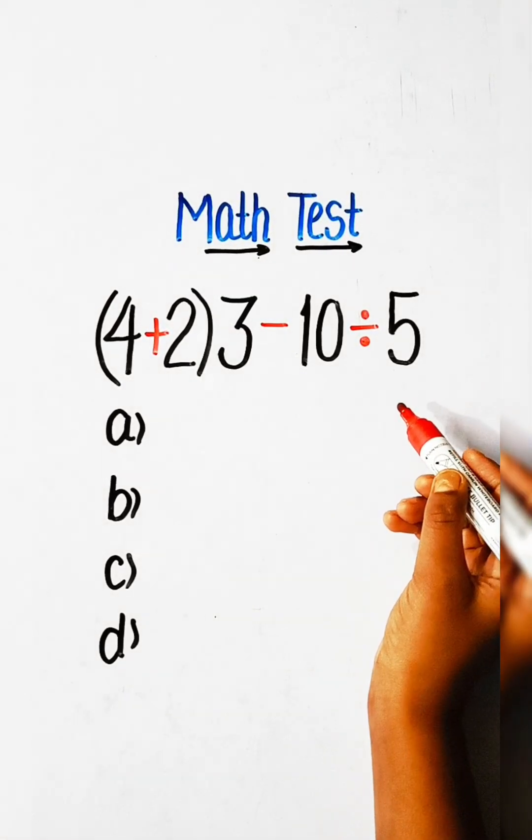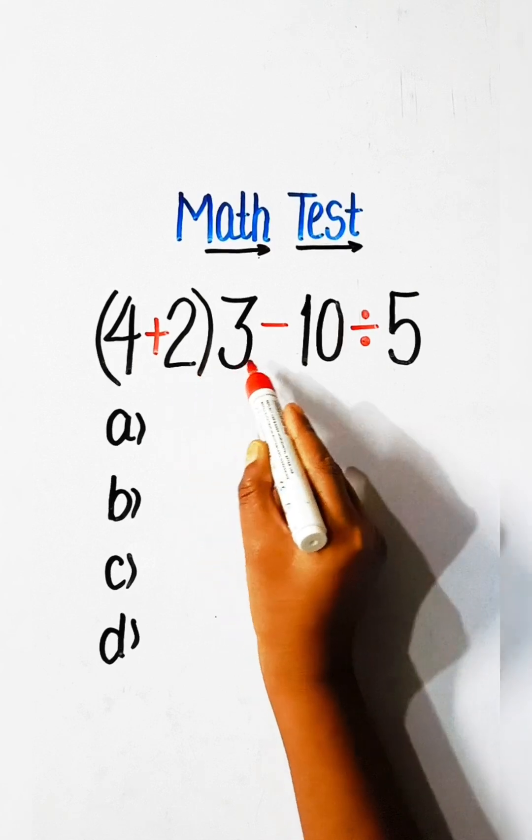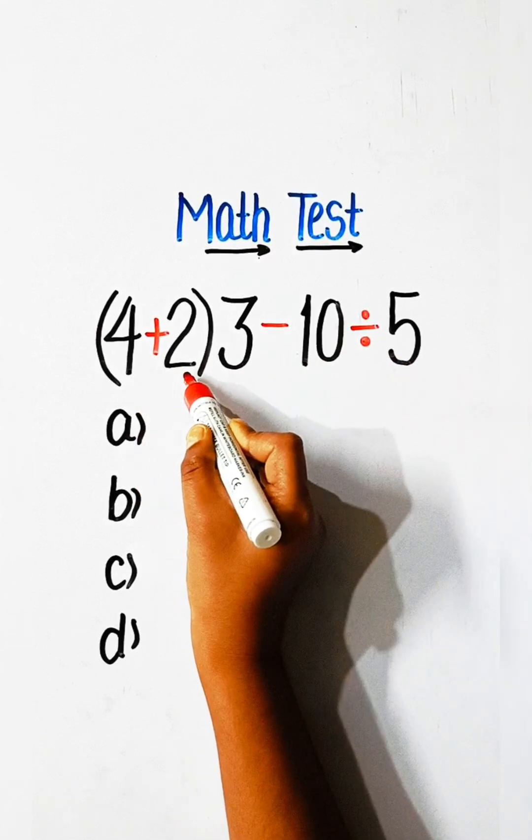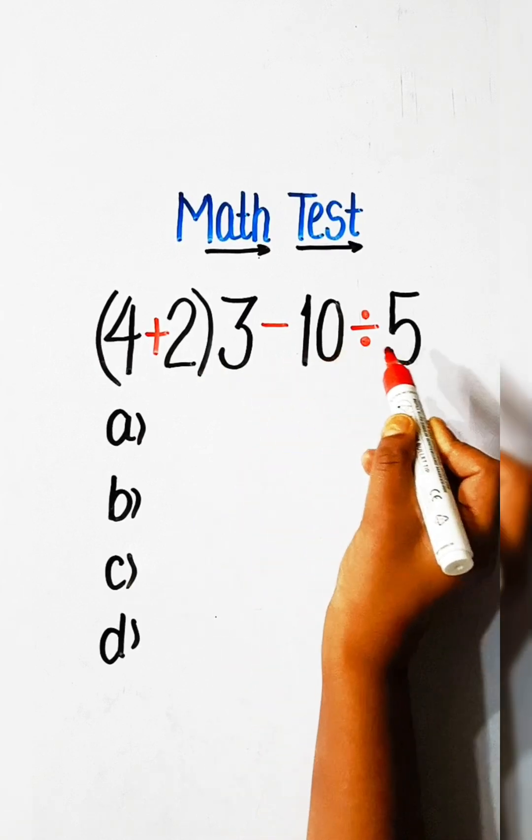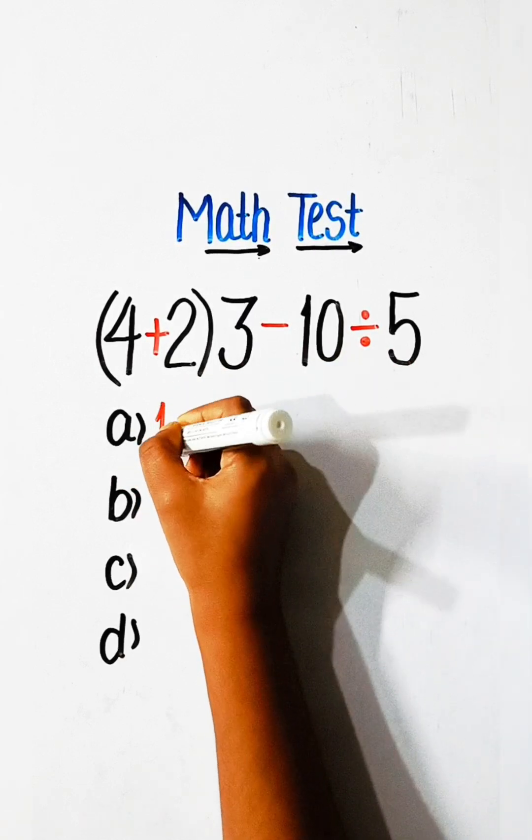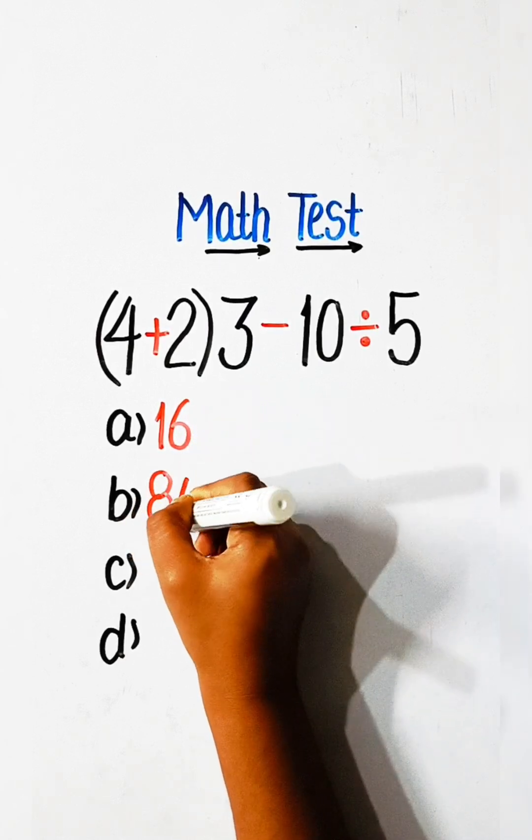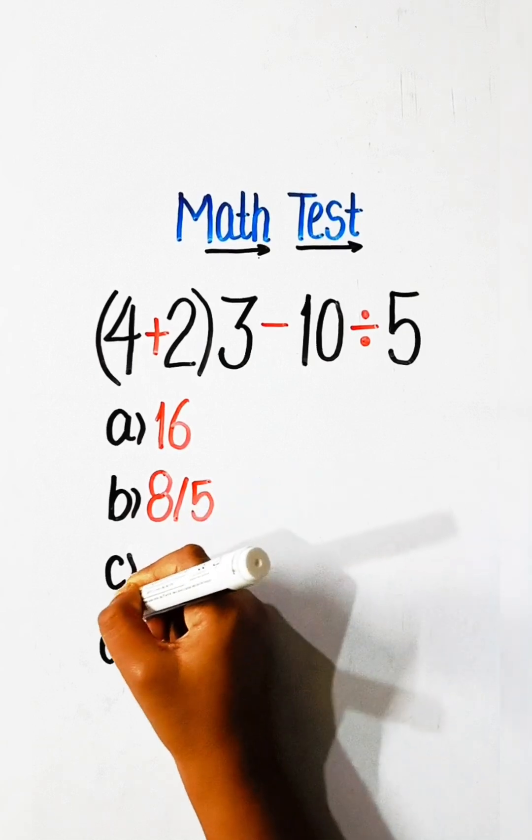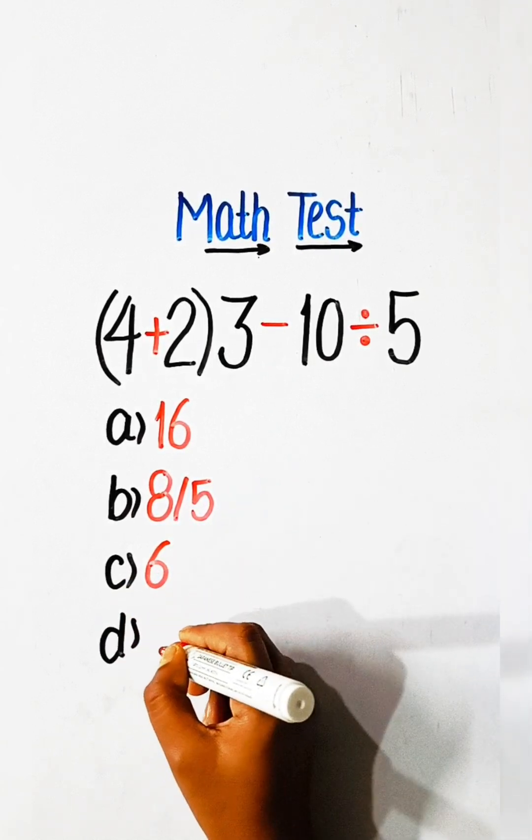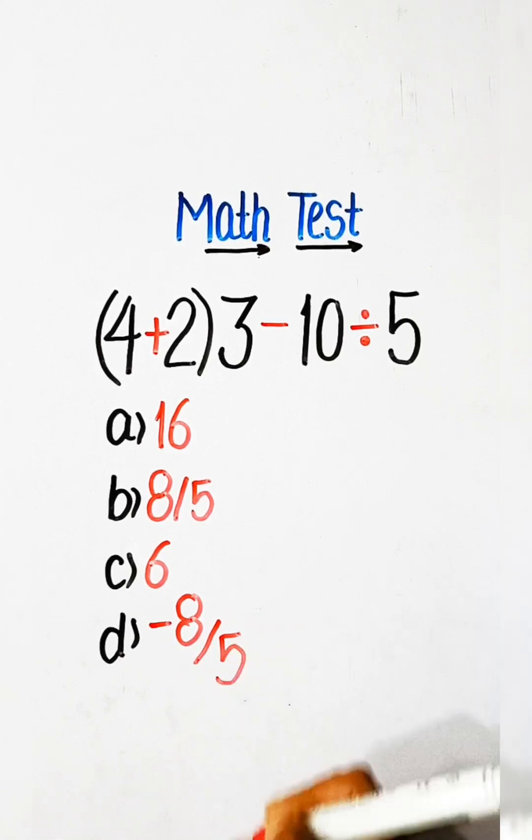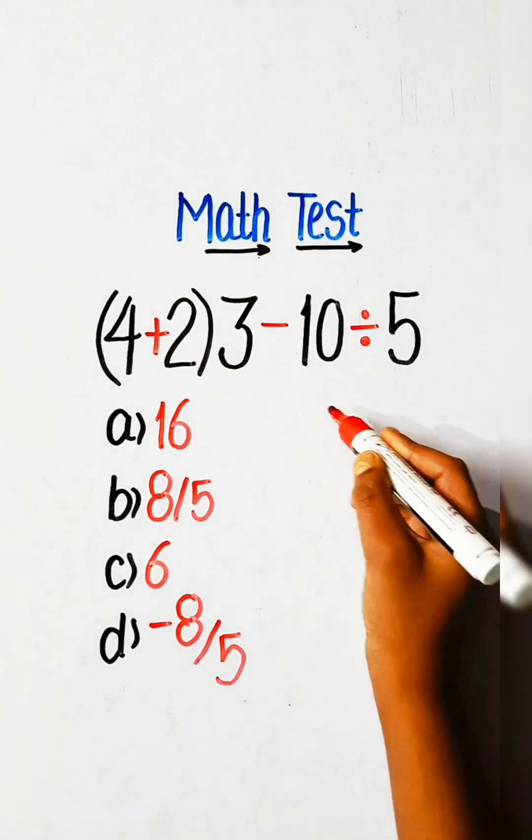Hello friends, let's solve another math expression: 4 plus, in brackets, 4 plus 2, multiply by 3 minus 10 divided by 5 equals to what? Option a: 16, option b: 8 upon 5, option c: 6, option d: minus 8 upon 5. Comment your answer.